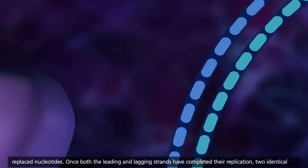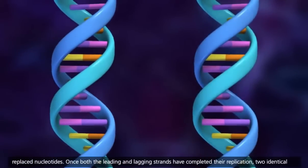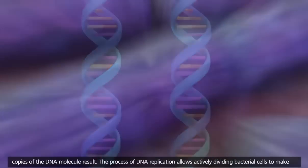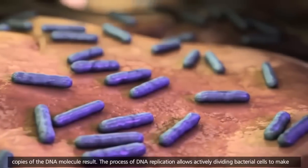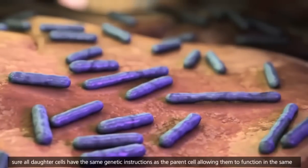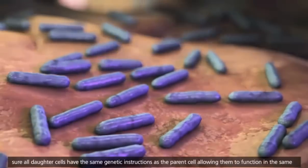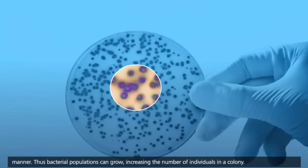Once both the leading and lagging strands have completed their replication, two identical copies of the DNA molecule result. The process of DNA replication allows actively dividing bacterial cells to make sure all daughter cells have the same genetic instructions as the parent cell, allowing them to function in the same manner. Thus, bacterial populations can grow, increasing the number of individuals in a colony.